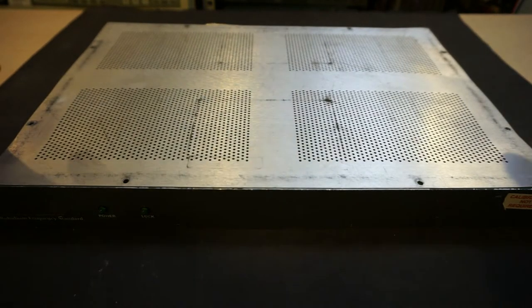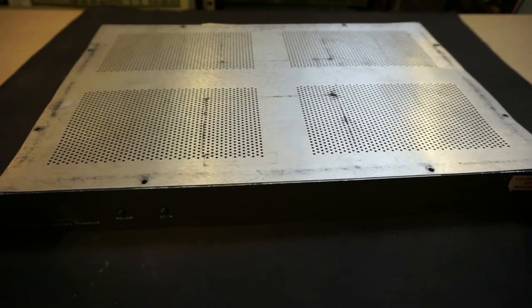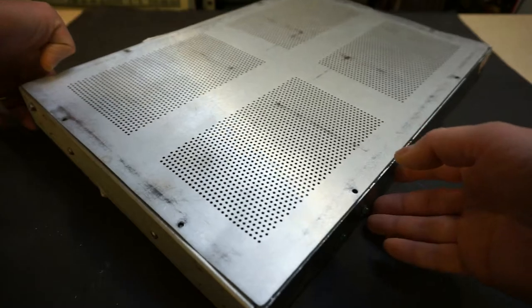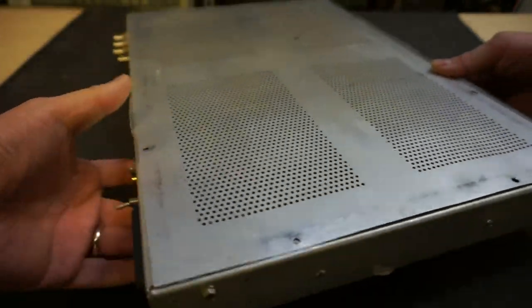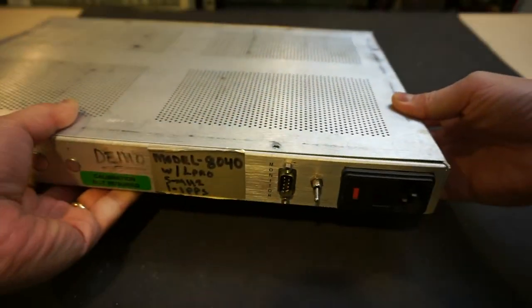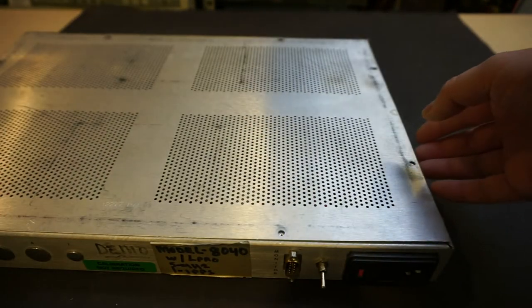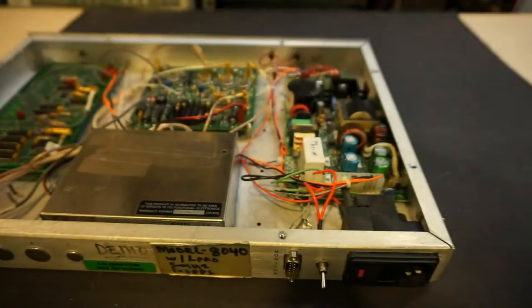So, now let's take a look at some of the modifications I did. The first thing I did, as I mentioned last time, I used this mainly once in a while to calibrate my equipment, so I don't want it to be on all the time. So, the very first thing I did was added a mains power switch, which is right here.